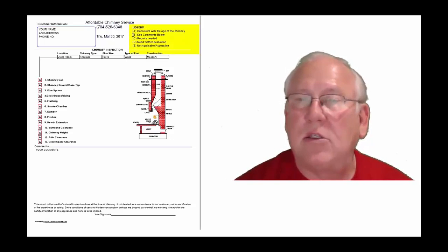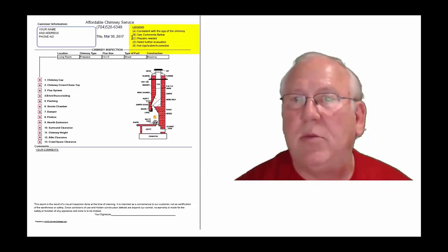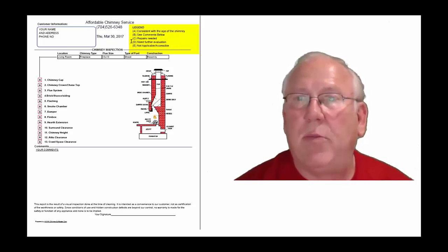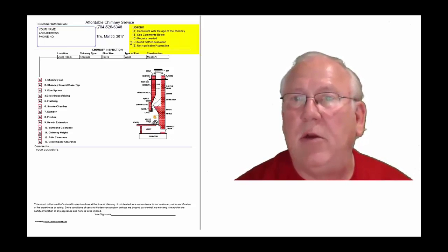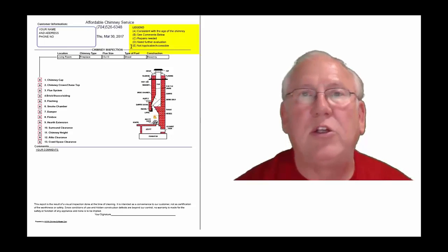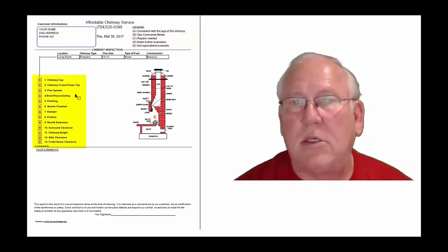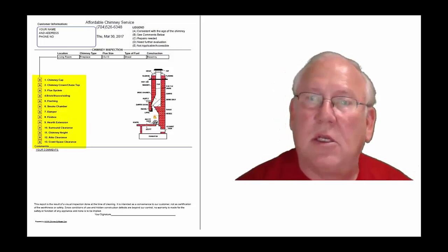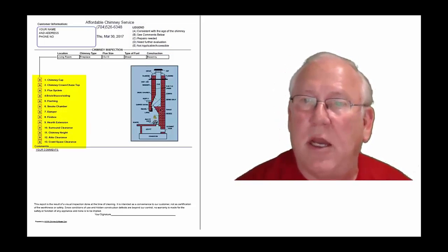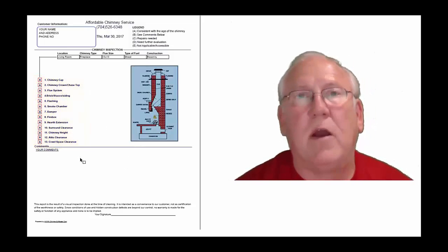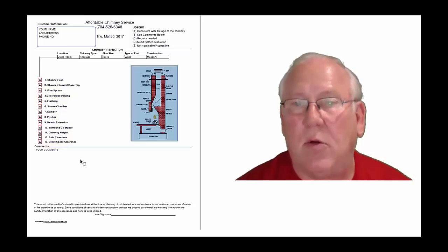Each one of these initials pertains to something. A is consistent with the age of the chimney. B: see comments below. C: repairs needed. D: need further evaluation. E: not applicable. They're placed into the boxes next to the parts of the chimney that can be easily identified in this diagram, and then you'll find my comments below.